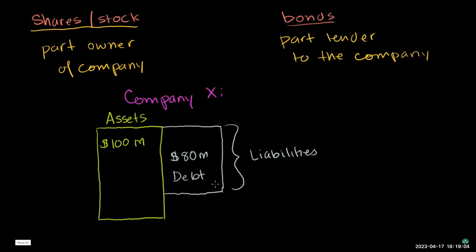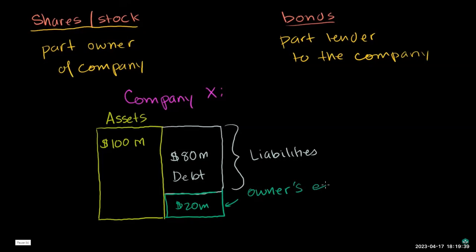What's left for the owners? If this company were sold and the assets really are worth $100 million, you'd get $100 million. You'd have to pay the debt holders first — so you'd have $100 minus $80, leaving $20 million for the owners. This is called the equity, or the owner's equity — completely analogous to having equity in a house. If you have a $300,000 house and still owe $200,000 on the mortgage, you have $100,000 in equity.